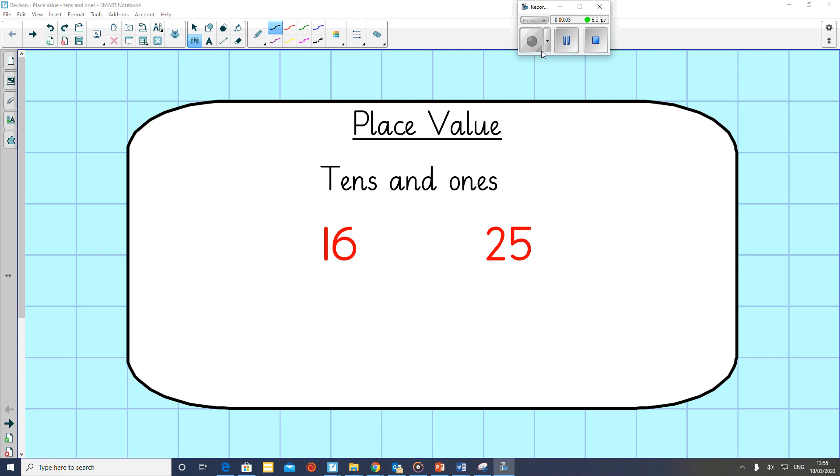OK, this is a revision session on place value. In Year 1 we have been learning about numbers and what they are made up from, how many tens and how many ones. So if we take this number 16, 16 is not made with a 1 and a 6, which is what some of the children thought in the beginning. It is actually made with one 10 and 6 ones.